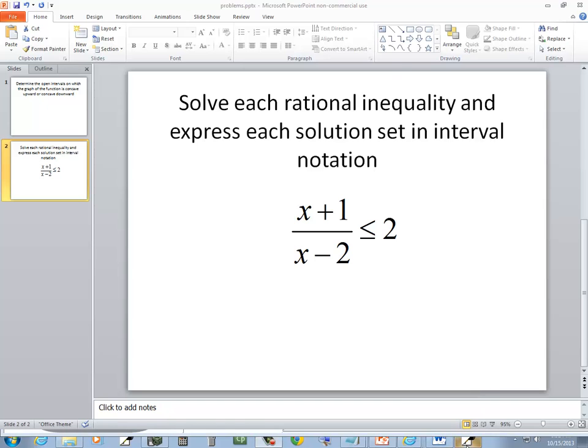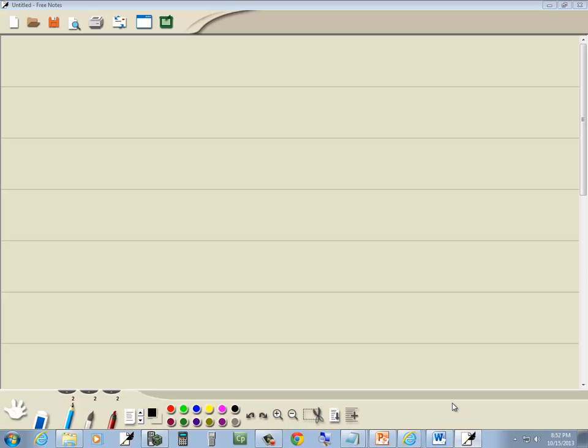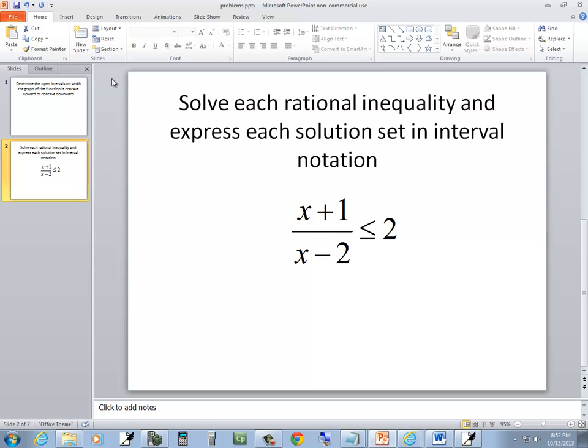In this problem we want to solve this rational inequality. So we got x plus 1 over x minus 2 is less than or equal to 2.